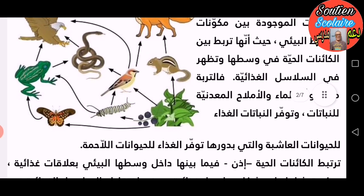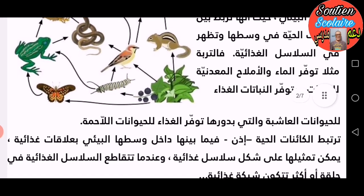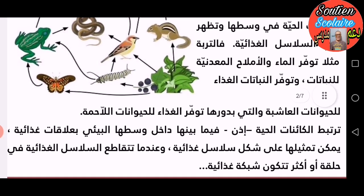ترتبط الكائنات الحية فيما بينها داخل وسطها البيئي بعلاقات غذائية، يمكن تمثيلها على شكل سلاسل غذائية. وعندما تتقاطع السلاسل الغذائية في حلقة أو أكثر، تتكون شبكة غذائية.